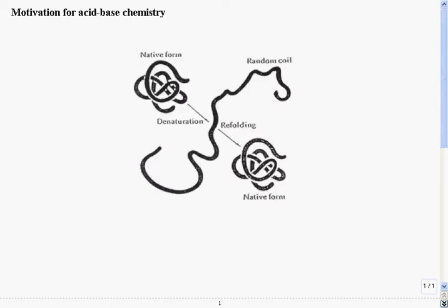I'd like to begin acid-base chemistry by bringing up an area where acid-base chemistry is most important, and that's biological systems. So here we look at a process as an example of effects of acid-base chemistry on biological systems: the denaturation of a protein.